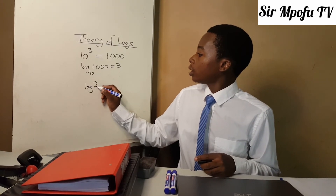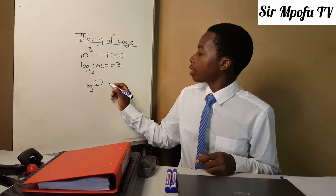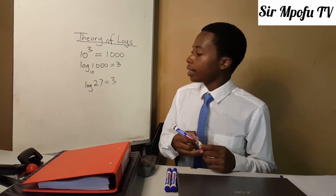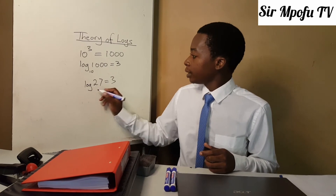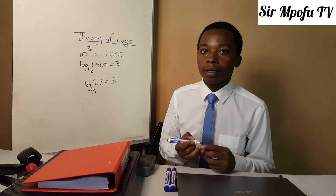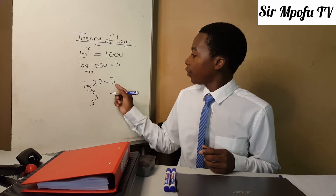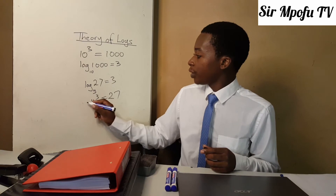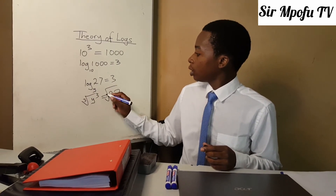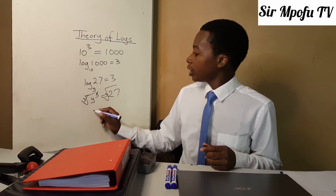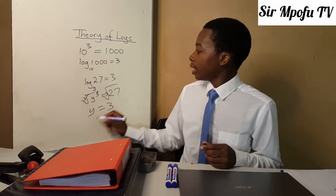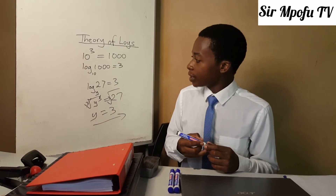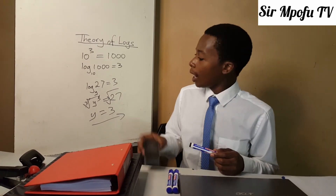Let us do something where you are asked to find your base. Say log 27 of base y equals 3. What you need to know is that y to the power of 3 equals 27. To remove the power of 3, introduce the cube root. So y equals the cube root of 27, which is 3. Therefore 3 to the power of 3 equals 27, and your base y equals 3.